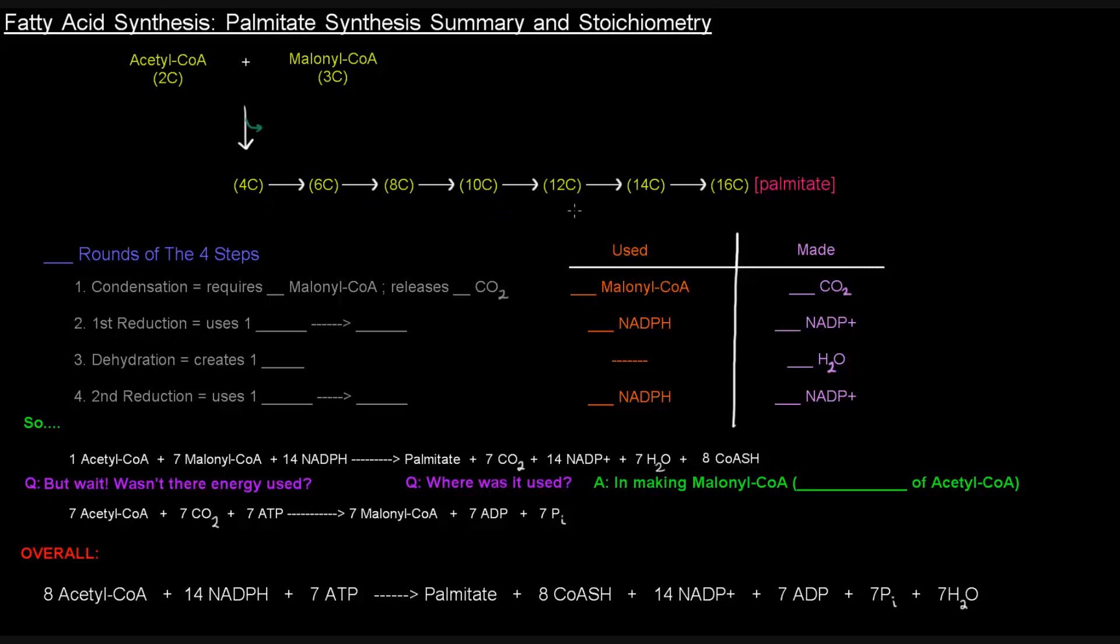So each one of these arrows indicates a round of fatty acid synthesis, or beta reduction. So there's one, two, three, four, five, six, seven rounds before we create a 16-carbon molecule, Palmitate. So that's seven rounds of the four steps.